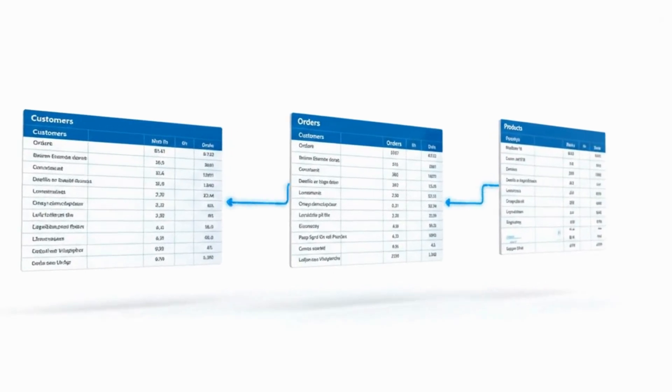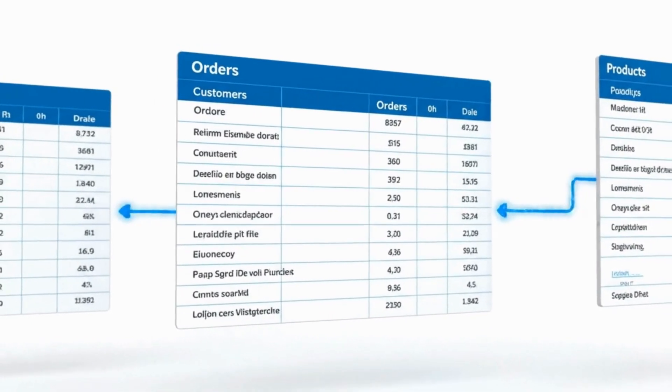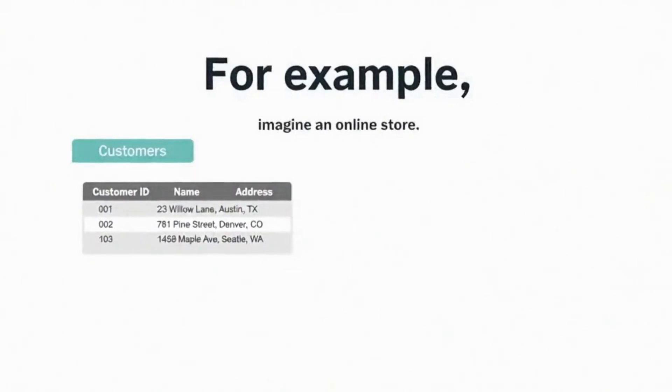Each table represents something specific, like customers, products, or orders. The magic happens when these tables connect to each other through relationships.